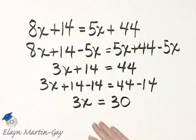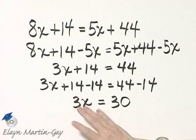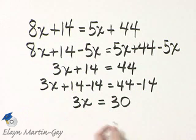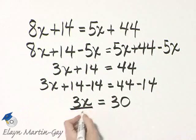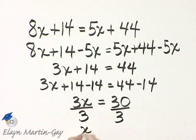Now what do I do to solve for x or get x by itself with an understood coefficient of 1? I will divide both sides by the coefficient of x. I'll divide the left side by the coefficient of x, the right side by the coefficient of x, and I'll have x equals 10.